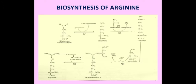Biosynthesis of arginine in animals. The biosynthesis of arginine follows the same pathway as proline synthesis up to the formation of glutamate-gamma-semialdehyde. Normally, the glutamate-gamma-semialdehyde compound cyclizes and directs the synthesis of proline. However, when arginine obtained from the diet is not sufficient, this glutamate-gamma-semialdehyde is directed towards the synthesis of ornithine.